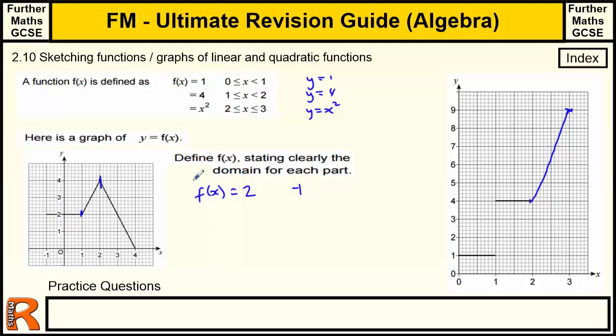Starting at minus 1. We don't actually know whether that includes minus 1 or not, so we'll use the same format we've got up there. Between minus 1 and 1, it's going to equal 2. And then we want this equation of this straight line. So this straight line comes down through 0, and its gradient is 2. So f(x) equals 2x between 1 and 2.